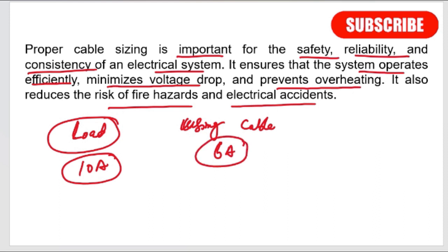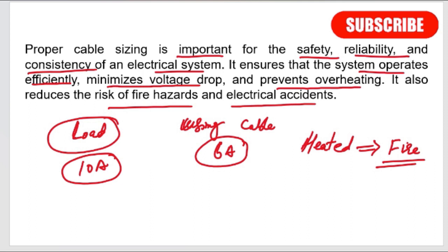whose current rating is only 6 amperes. The load is drawing 10 amperes but the cable is only rated for 6 amperes. Due to overloading, the cable gets heated and there is a chance it will catch fire, causing an electrical accident. Additionally, if the resistance of the cable is very large, there will be a large voltage drop — the load will not get proper voltage, will not function properly, and its efficiency will decrease. To avoid fire risk and to increase efficiency, the cable size must be proper.